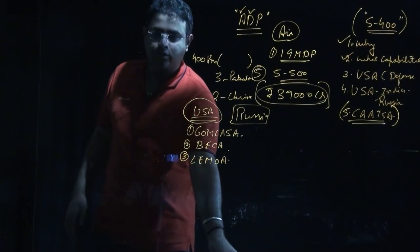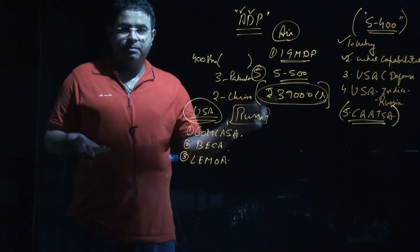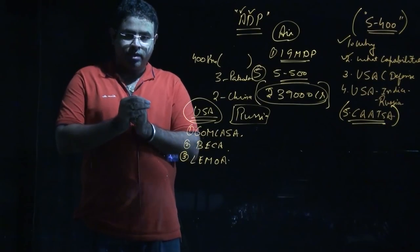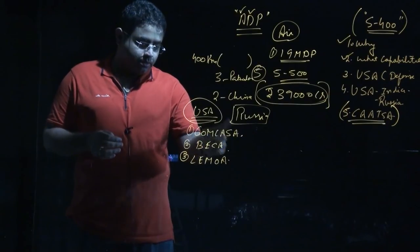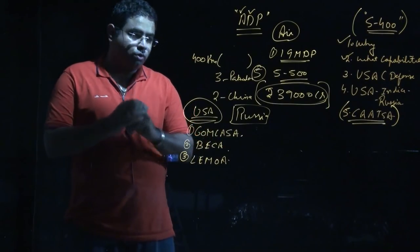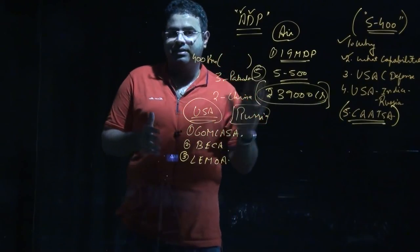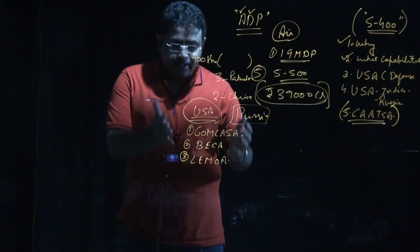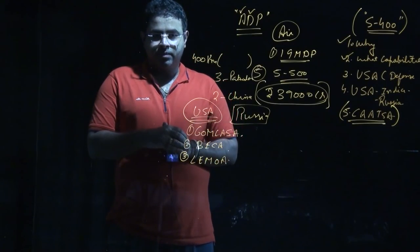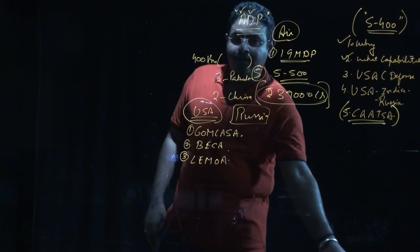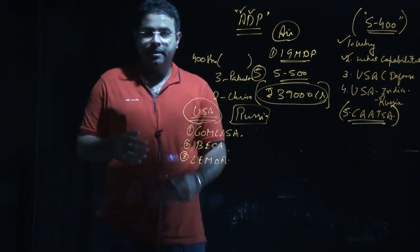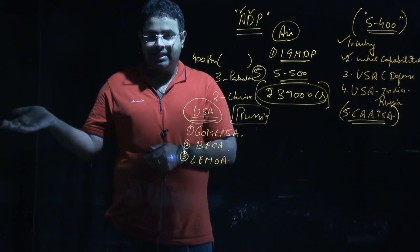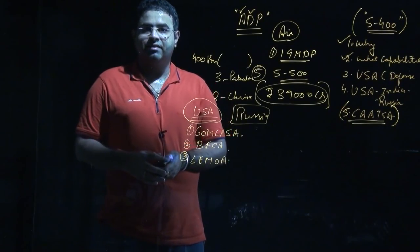This is an important development on the defense front. This is important from GS Mains Paper 2 and also from GS Mains Paper 3. You must learn what COMCASA, BECA, and LEMOA are, and also learn about CAATSA. We've already covered this in an earlier current affairs class. Tomorrow we'll be dealing with these three agreements. That was all for the day. If you have any query regarding this lecture, you can contact me at 8459400000. You can also join our offline classes at Delhi center or Chandigarh center. Bye bye, take care, have a nice day.